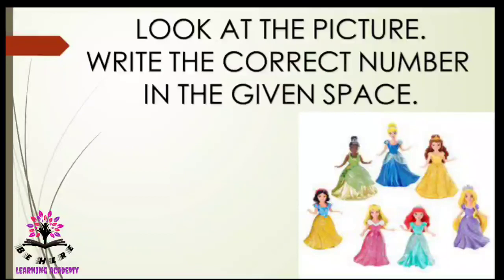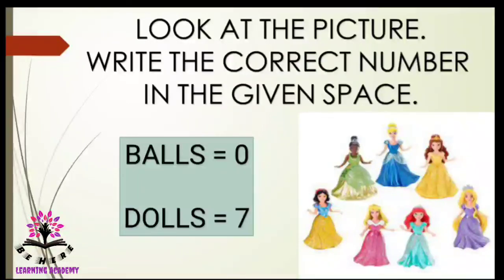Look at the picture and write the correct number in the space. How many dolls do you find in the image? 1, 2, 3, 4, 5, 6, 7. So, the number of dolls is equal to seven. Do you find any balls in the image? No. So, the number of balls is zero, but the number of dolls is seven.